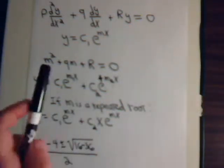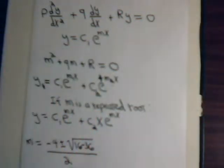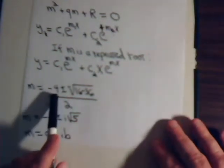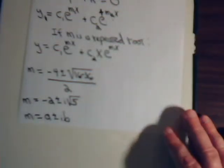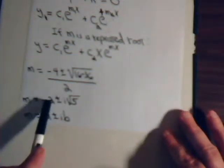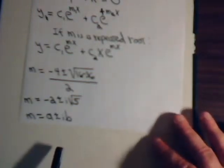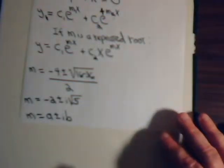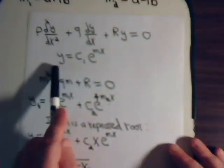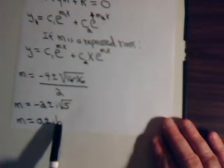But now suppose that we're solving a quadratic equation and we get complex values for m. Maybe when solving the quadratic equation we have something that gives us minus two plus or minus i times the square root of five. Notice that when we do get complex values, they're going to occur as conjugates. We can write it in a general form as some real number a plus or minus i times b.